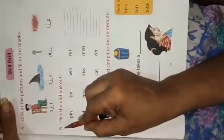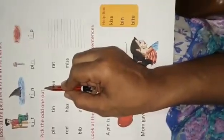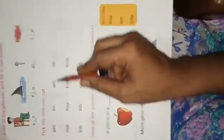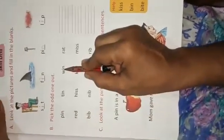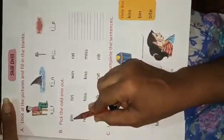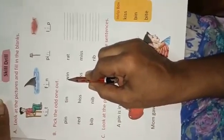Second exercise, B exercise is pick the odd one out. Now we will see in these three words. We have P-I-N pin, T-I-N tin, W-I-N win.